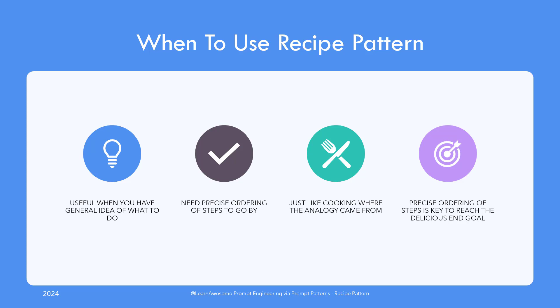You can use it to ask for recipes — and I mean real cooking recipes — given a list of ingredients you have around. Or you can ask the large language model to provide you three different cooking recipes for the chicken and spices you have available with you.